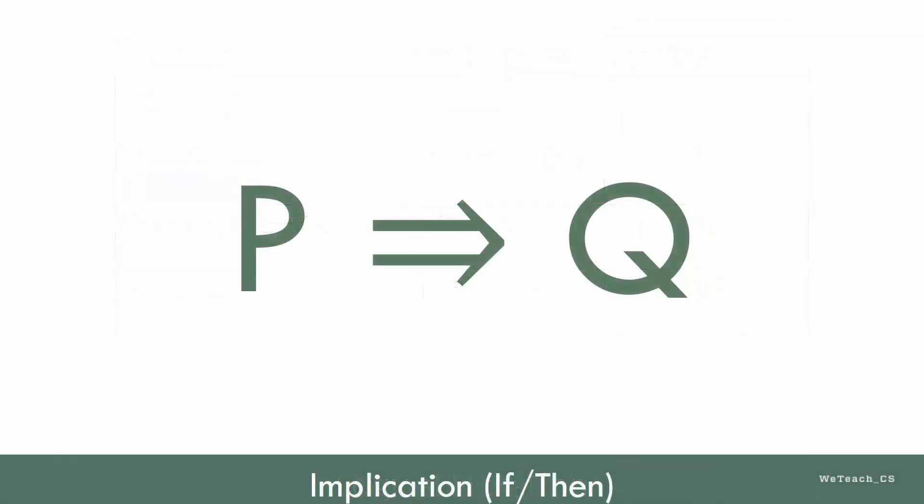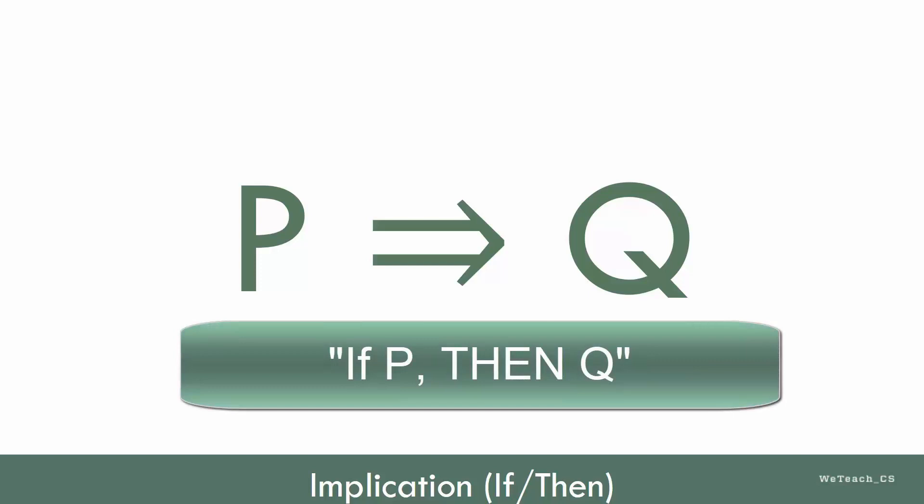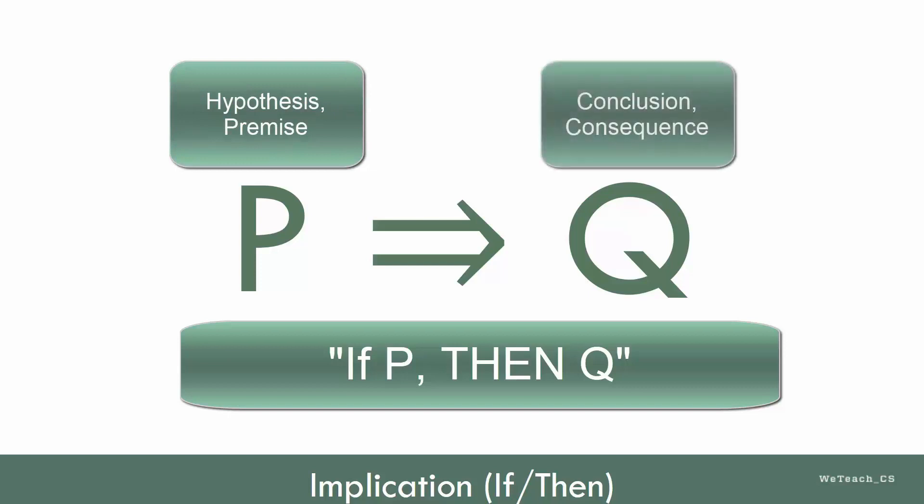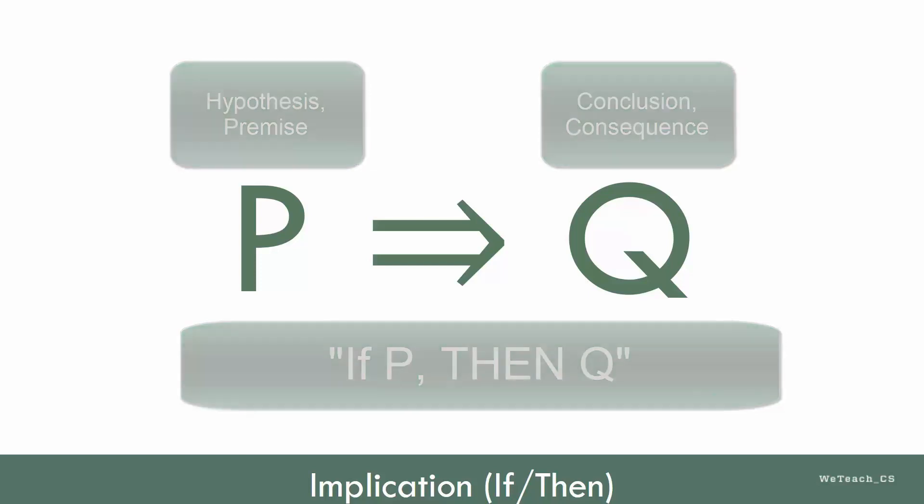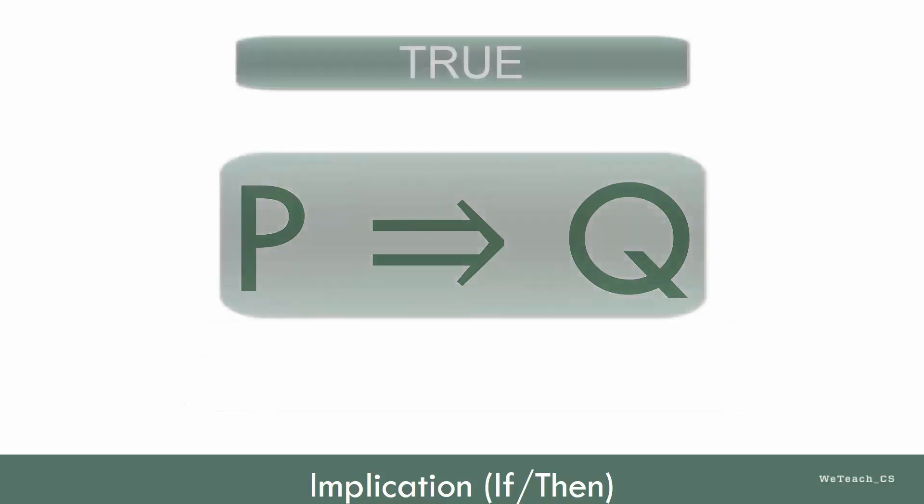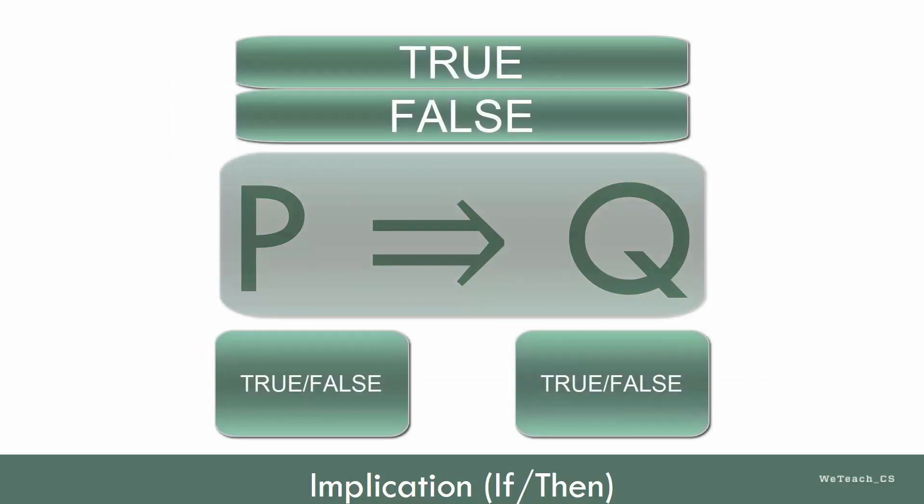This is a notation for an implication statement, which is read, if P, then Q. The proposition P is a hypothesis or premise, and Q is a conclusion or a consequence. The entire implication can be true or false, as well as each proposition separately.